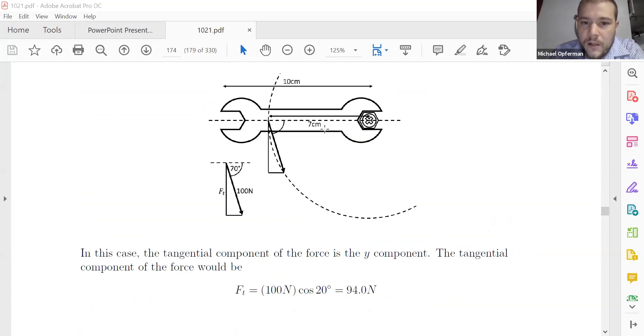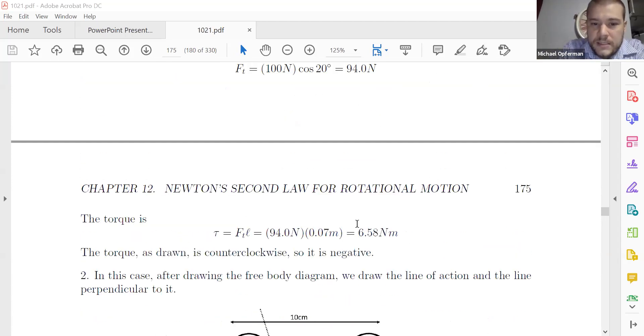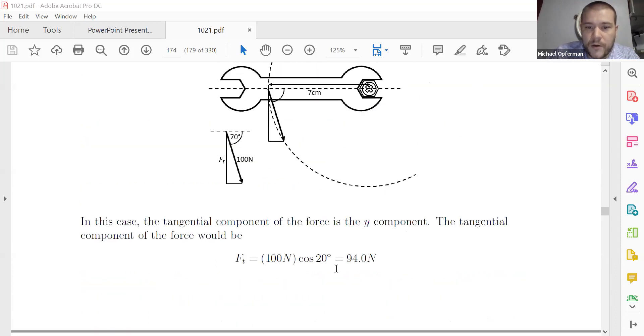And now remember L. So I have the force component and I have this distance here is my L, so that's the seven centimeters that was given. So I have here FT is 94, and I have L is seven centimeters. And that gives me a torque of 6.58 newton meter. By the way, the unit of torque is newton times meter, SI unit. So that's the force component based method.